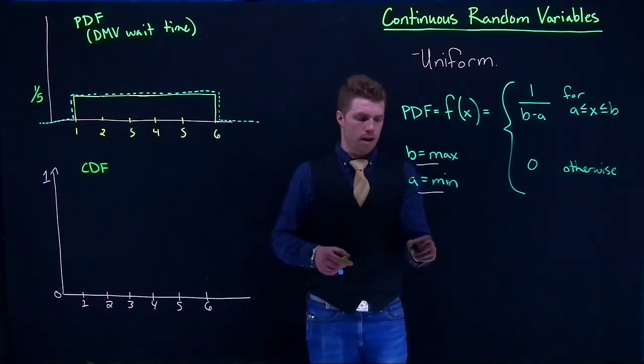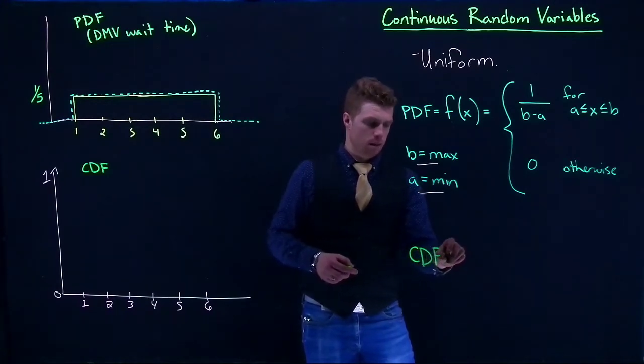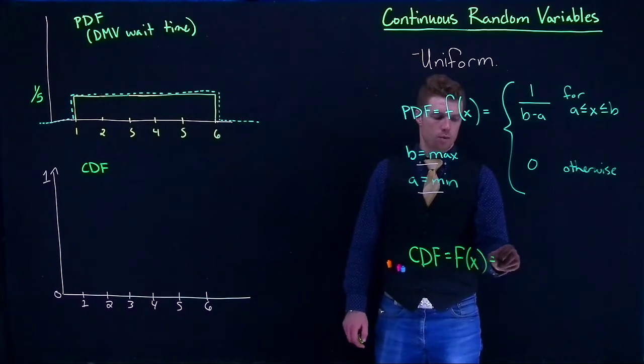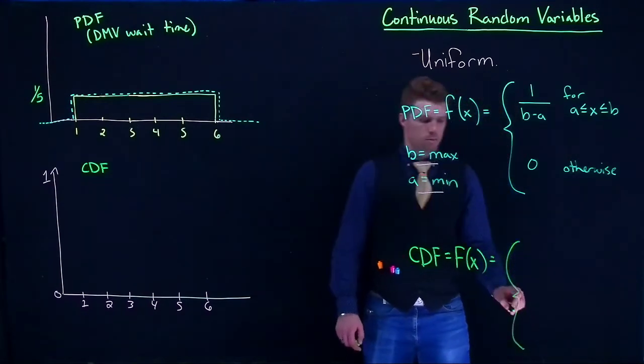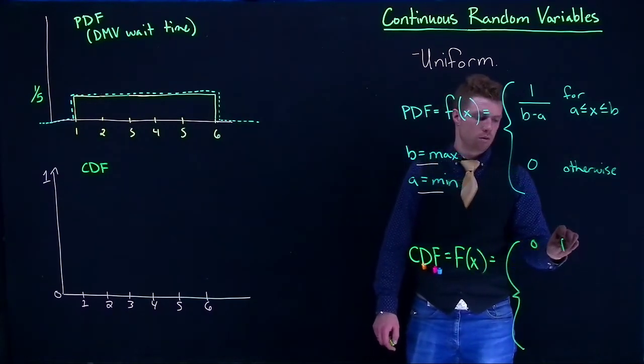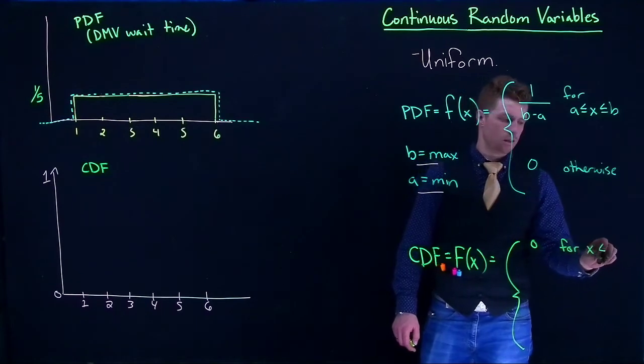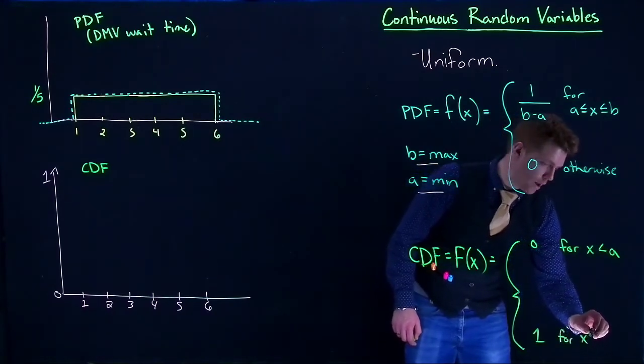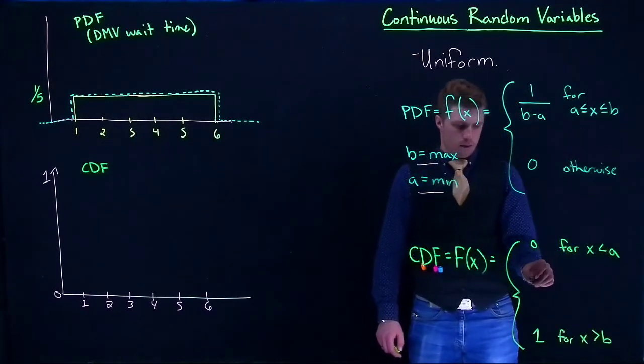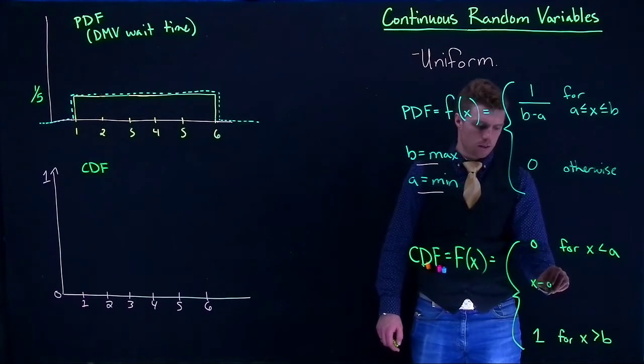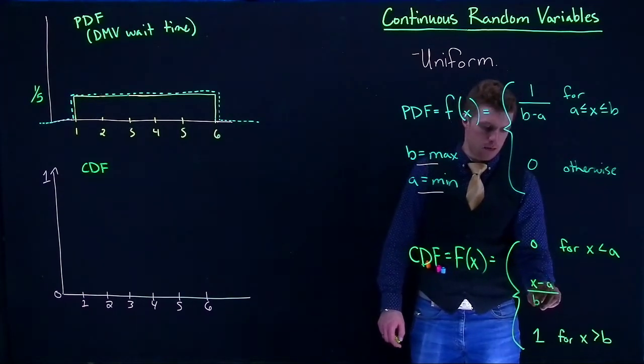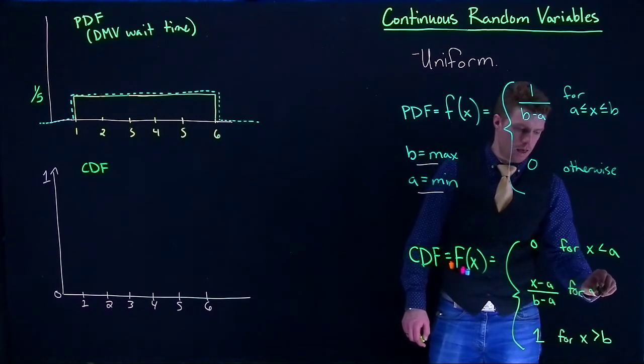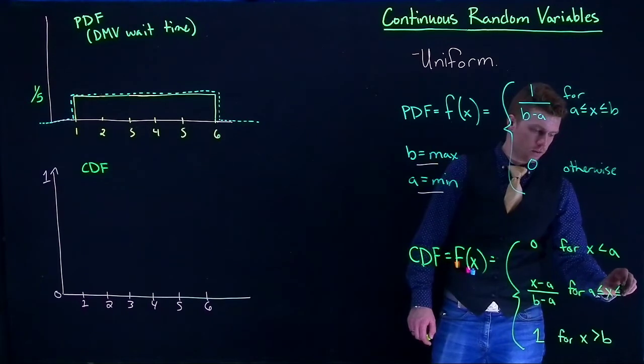Okay, so if we write out our CDF, this is going to be equal to F, capital F of X, and this guy is equal to this particular piecewise function. It's going to be zero for X being less than a, one for x greater than b, and then it's going to be x minus a divided by b minus a, and that is for a less than or equal to x less than or equal to b.